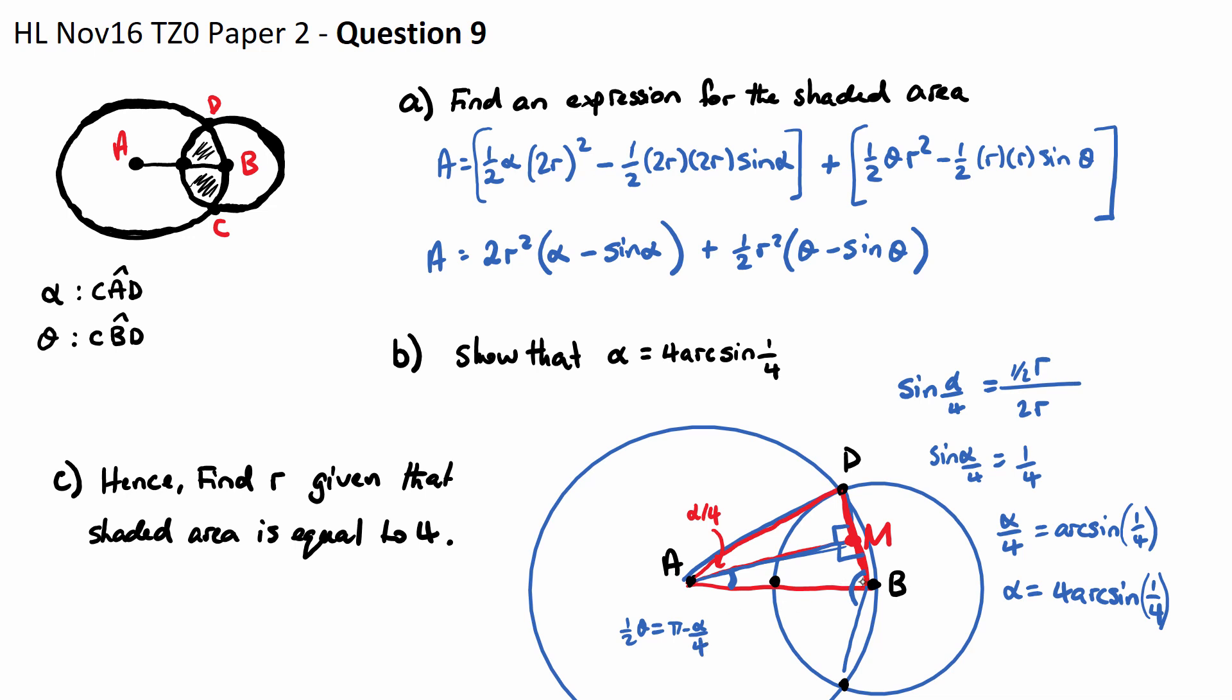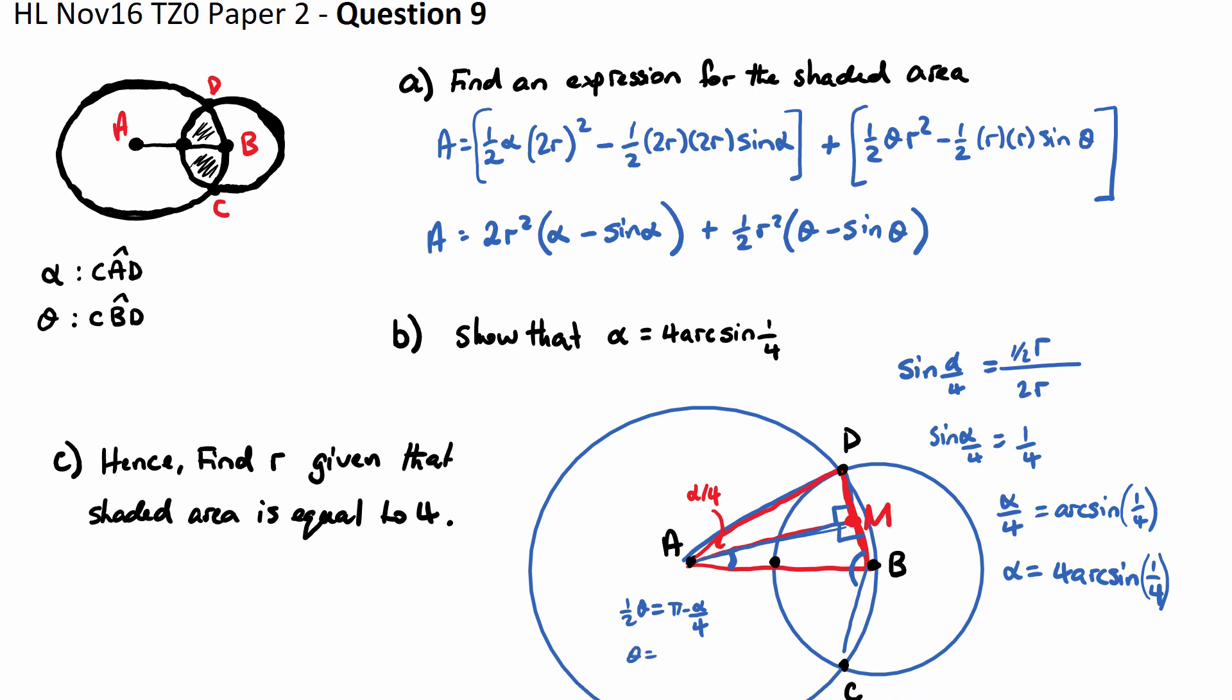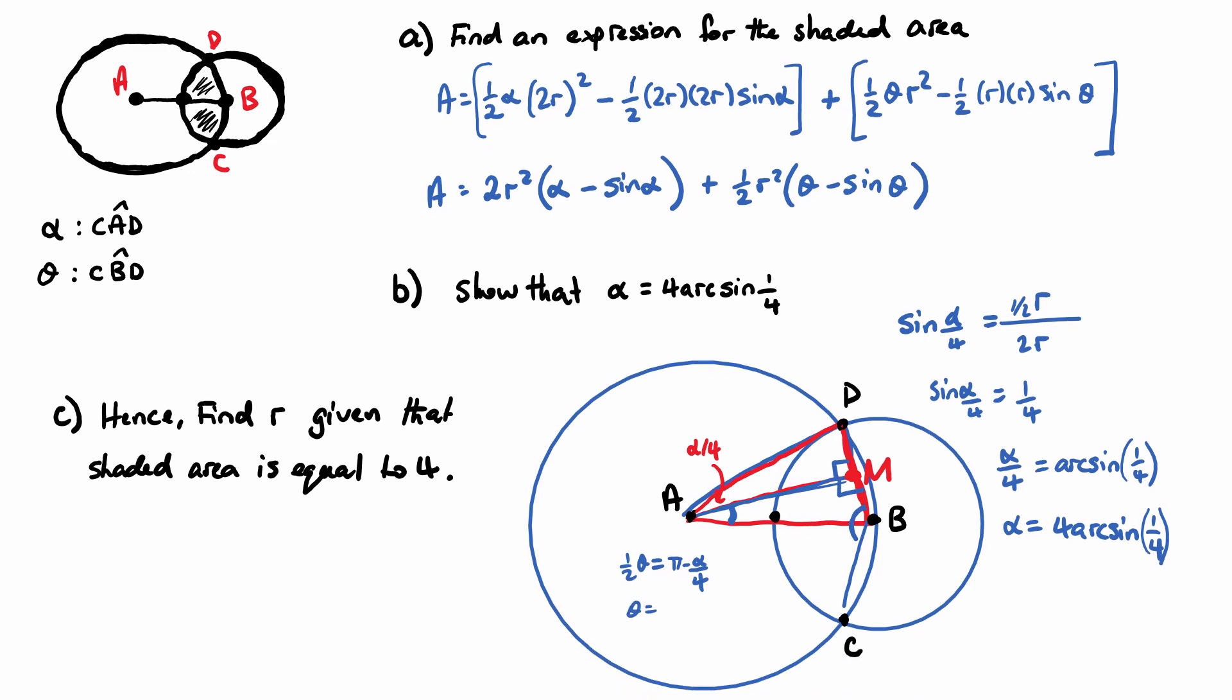So just to double check what theta would just be. If I multiply everything by 2, I'm going to get pi minus alpha on 2. So this is an expression for theta.